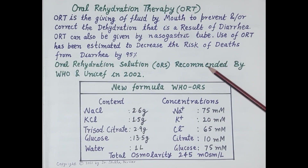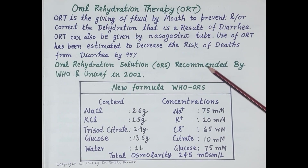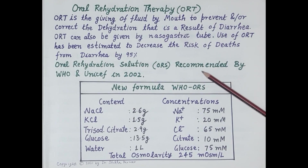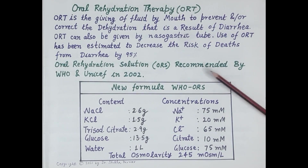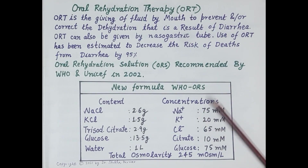A formula for preparing ORS was given by WHO in 1984, but later it was found to cause periorbital edema due to excess sodium ions. Therefore, in 2002, a new formula for preparing ORS with low sodium ions and thus low glucose was released by WHO.